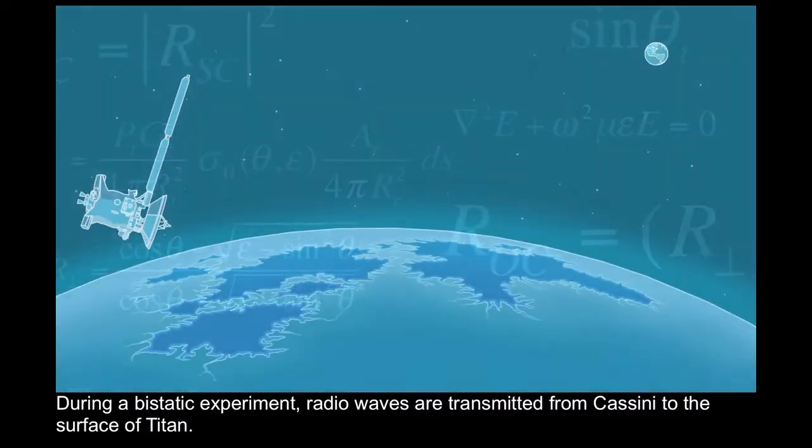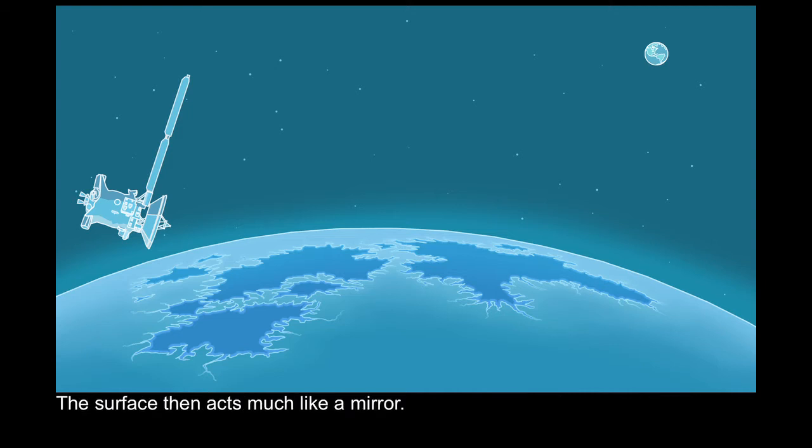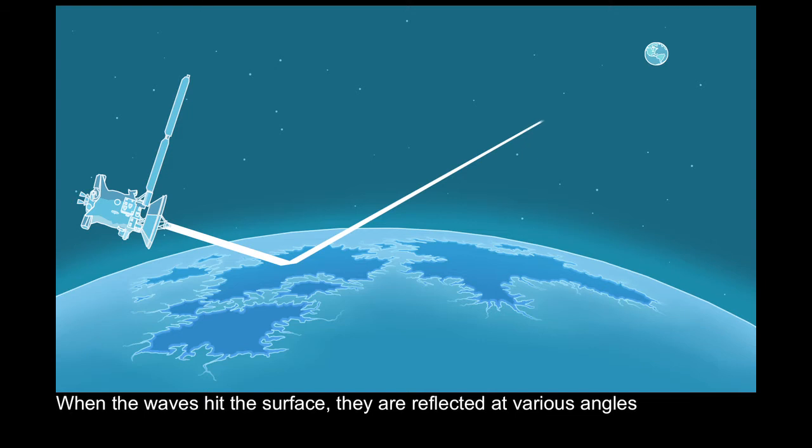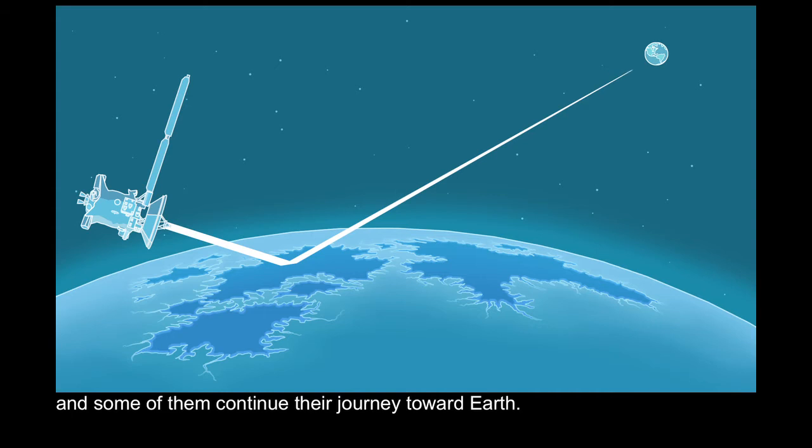During a bistatic experiment, radio waves are transmitted from Cassini to the surface of Titan. The surface then acts much like a mirror. When the waves hit the surface, they are reflected at various angles, and some of them continue their journey toward Earth.